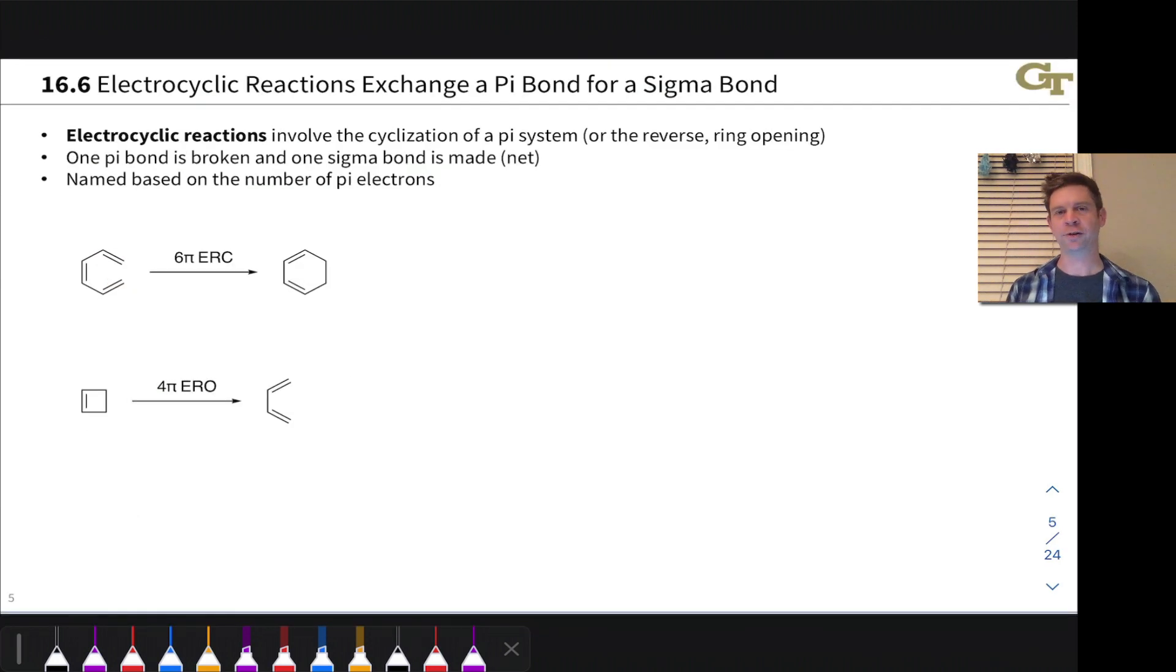An electrocyclic reaction involves the cyclization of a pi system or what we might call ring closing or the reverse, which is ring opening to form a conjugated pi system.